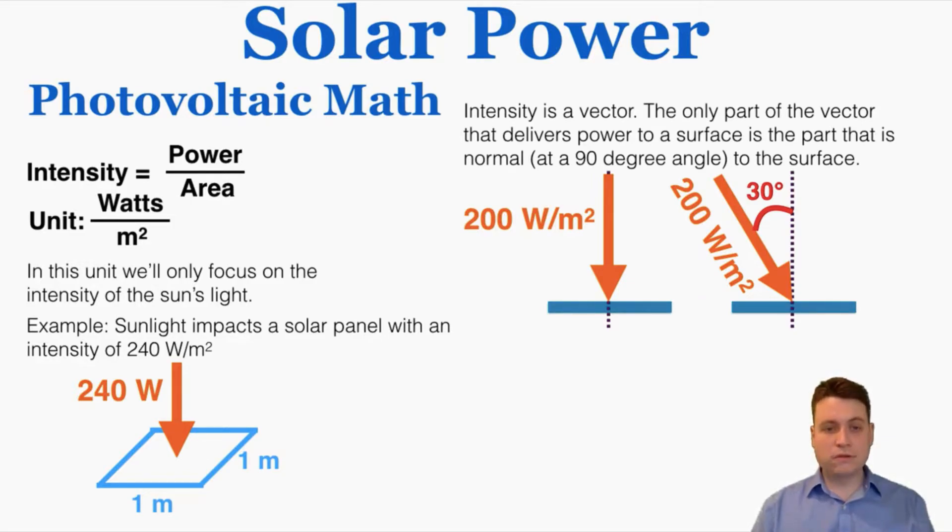In this unit, we'll only focus on the intensity of the sun's light. As an example, if I say that sunlight impacts a solar panel with an intensity of 240 watts per meter squared, that means that every square meter of the panel is experiencing 240 watts of radiant power being delivered to it. That's 240 joules of radiant energy being delivered to every square meter of the panel every second.